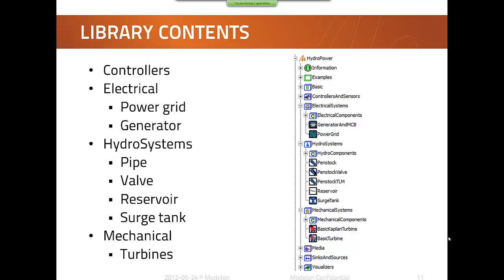Okay, so a little bit about what you can find in the library. The library content has a controller which contains special controllers for hydro power plants, which are PID based with different parameter settings dependent if the model for example is connecting on the grid or not. It contains electrical models. It contains a power grid model, so it's a dynamic grid model where it's possible to add and remove load and production units during simulation. It also contains generator models and the switch which is called MCB, main circuit breaker, which is used to connect to the grid. And it has several different hydrosystems components which you will find under hydrosystems package. So it contains discretized pipe models, valve models, reservoir models and surge tank.